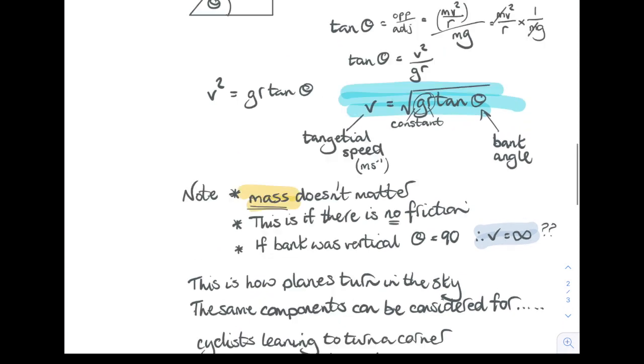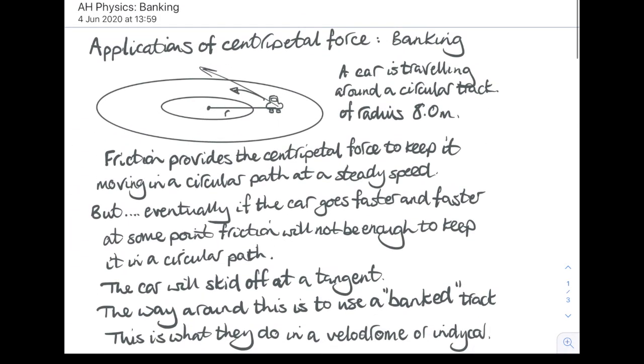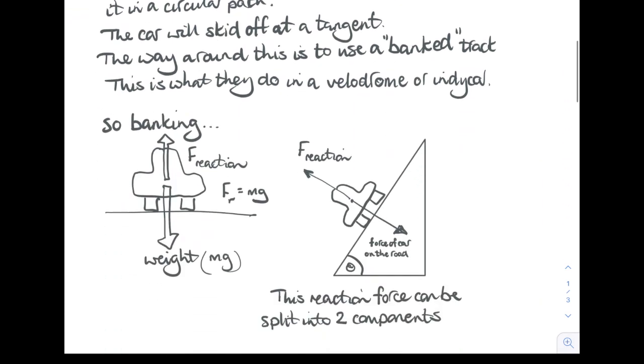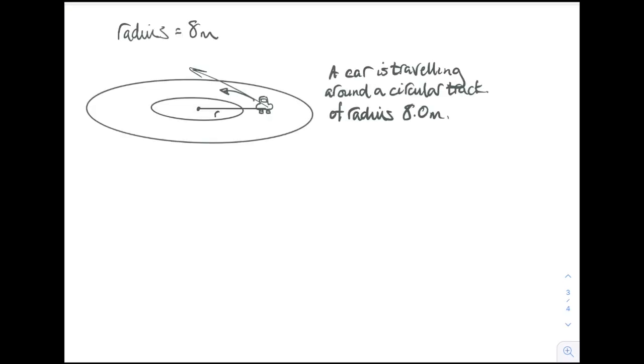Okay, we haven't done an example, so let's go back to the start where we told you this car was traveling on a track of radius 8 meters. Let's consider that this 8-meter radius track is a banked track.